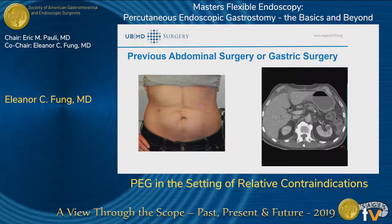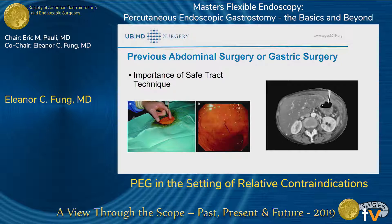For previous abdominal surgeries, scars can sometimes get in the way, and this used to be considered a contraindication mostly because of adhesions or inability to achieve a safe window. The CT scan shown is of a patient after a Whipple procedure — the stomach is still relatively well opposed to the anterior abdominal wall, which is where pre-procedure imaging is helpful in these circumstances. Although our typical location is two fingerbreadths below the xiphoid and to the left, sometimes you have to adjust the location more left lateral to achieve a safe tract.